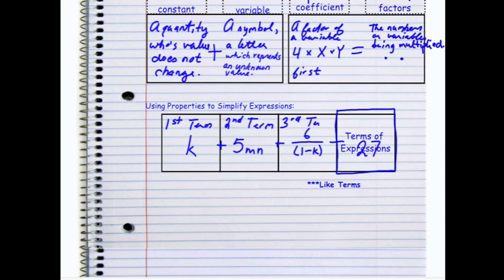So in this case, I have four terms. Because in between the four terms in my equation, I have an addition sign or subtraction sign. So the terms themselves are the K, the 5MN, the 6 over 1 minus K, and the 27. There are four different components to my equation. It's important to know what terms are, because we can combine like terms. And that's a really important vocabulary word.